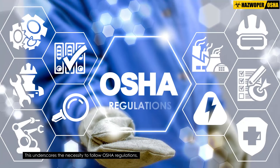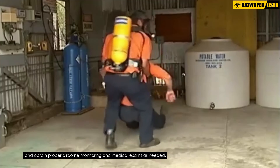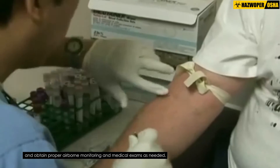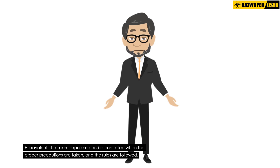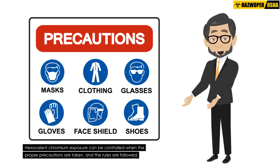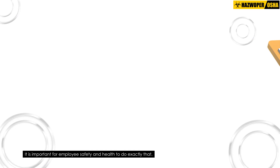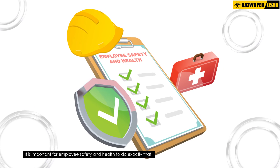This underscores the necessity to follow OSHA regulations, wear appropriate PPE when required, and obtain proper airborne monitoring and medical exams as needed. Hexavalent chromium exposure can be controlled when the proper precautions are taken and the rules are followed. It is important for employee safety and health to do exactly that.